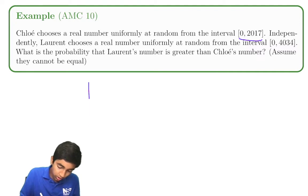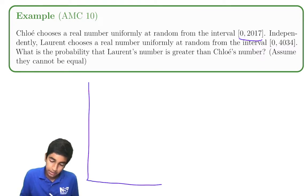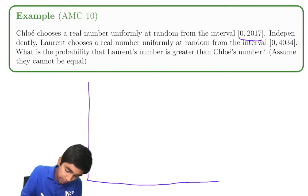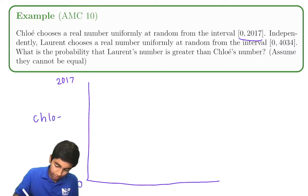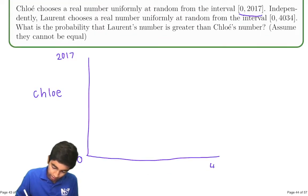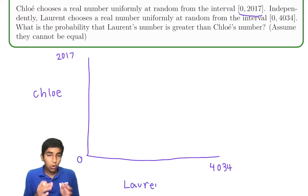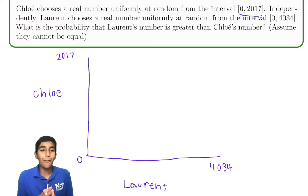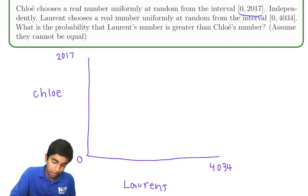So the way to approach geometric probability is to let's graph it in a way. Chloe, 0 to 2017. Chloe, 0 to 4034. That's Laurent. So Laurent chooses a real number at random. And Chloe also chooses a real number at random. What's the probability that Laurent's number is bigger? Well, in this diagram, Laurent is x, Chloe is y.